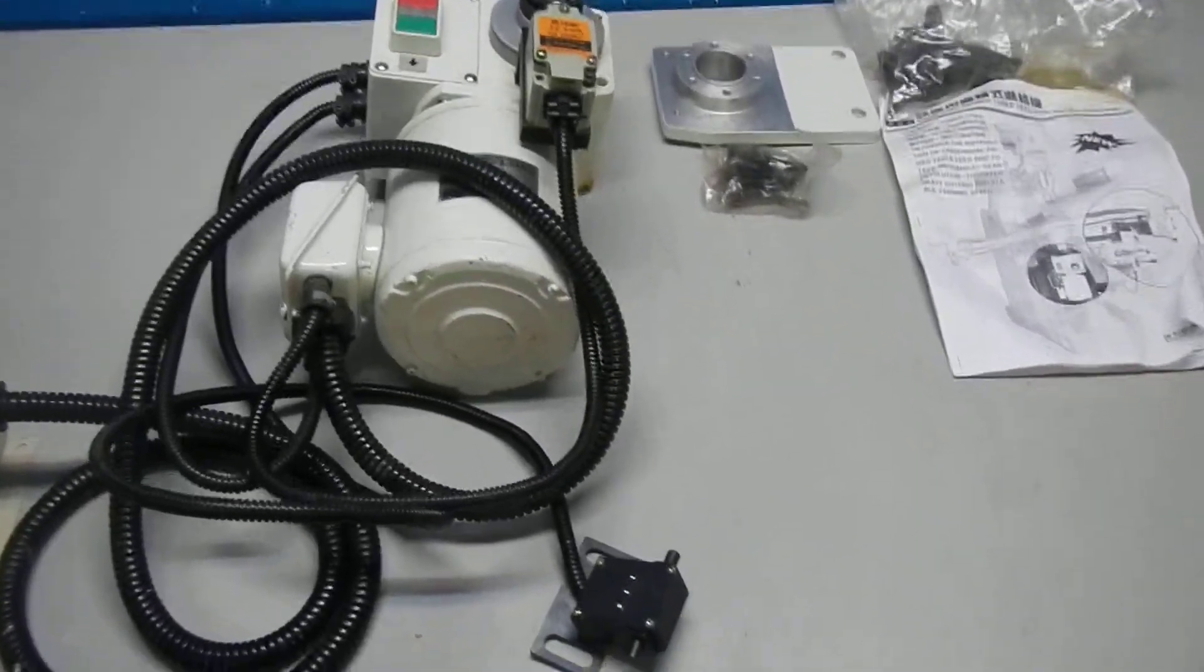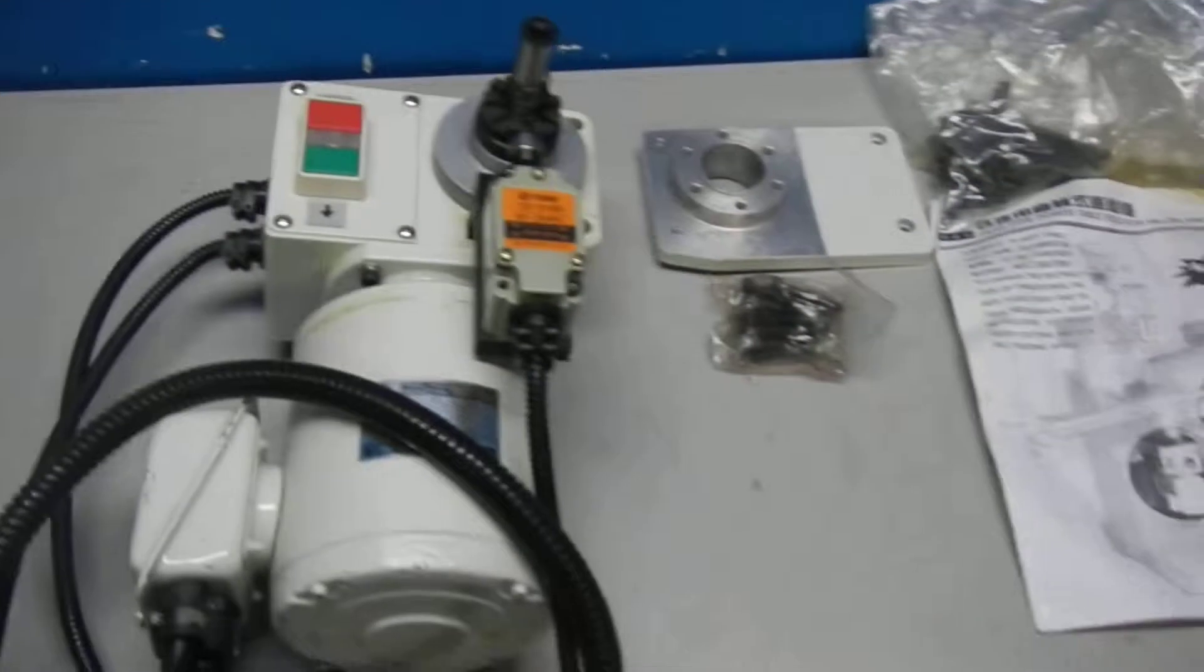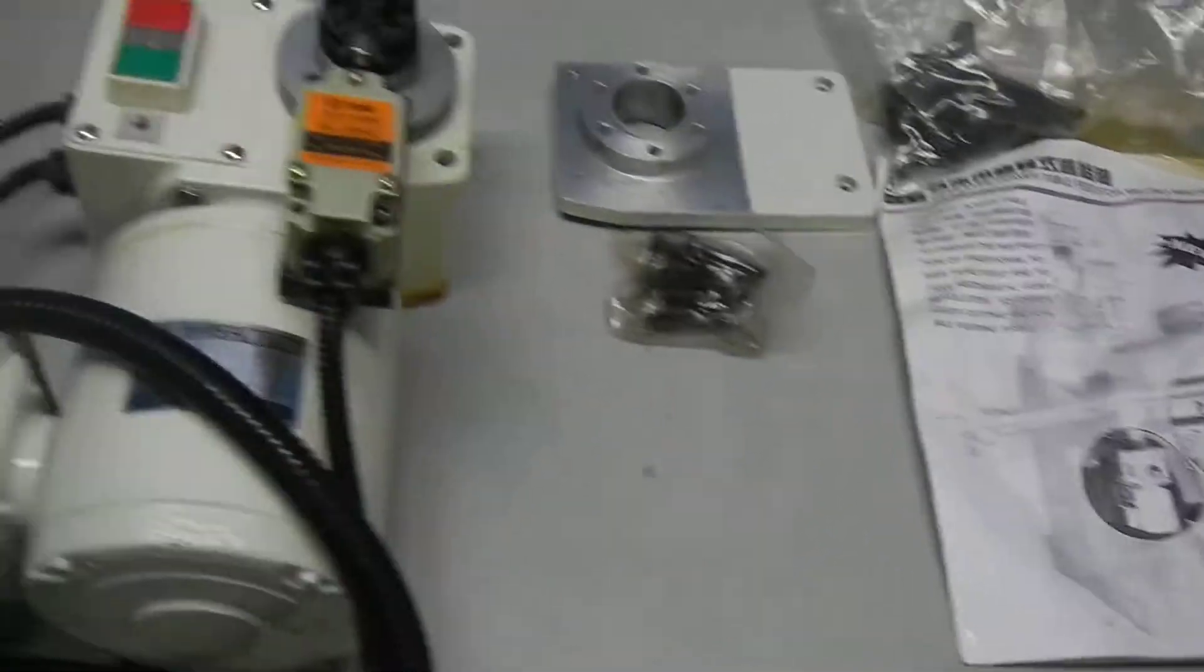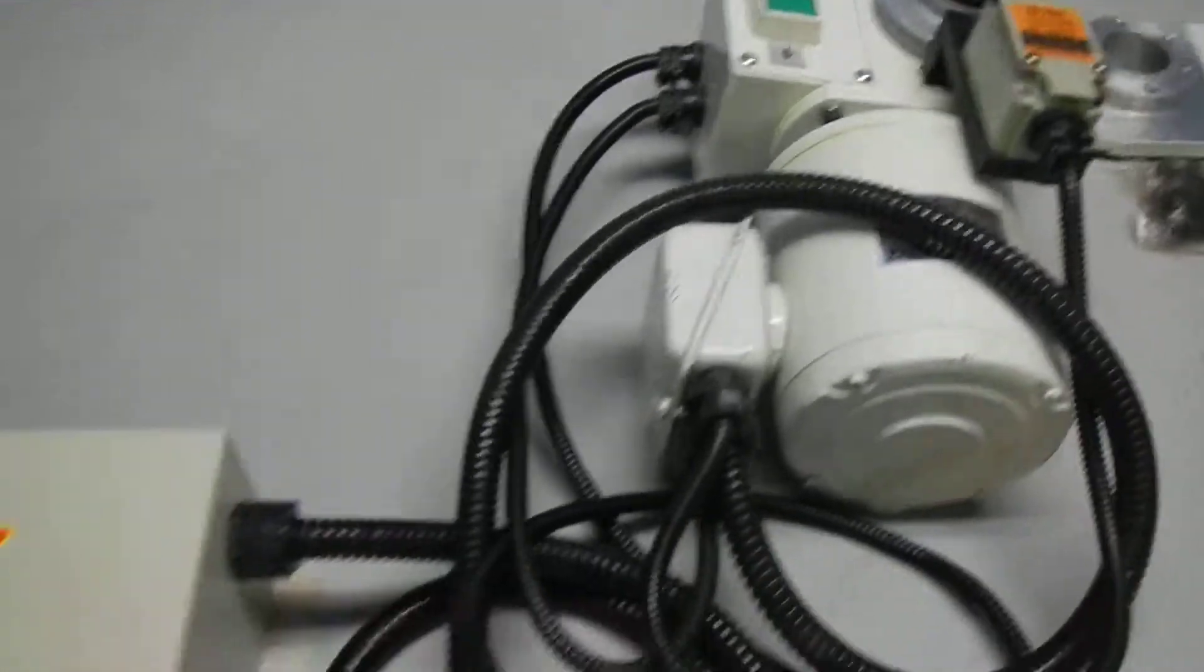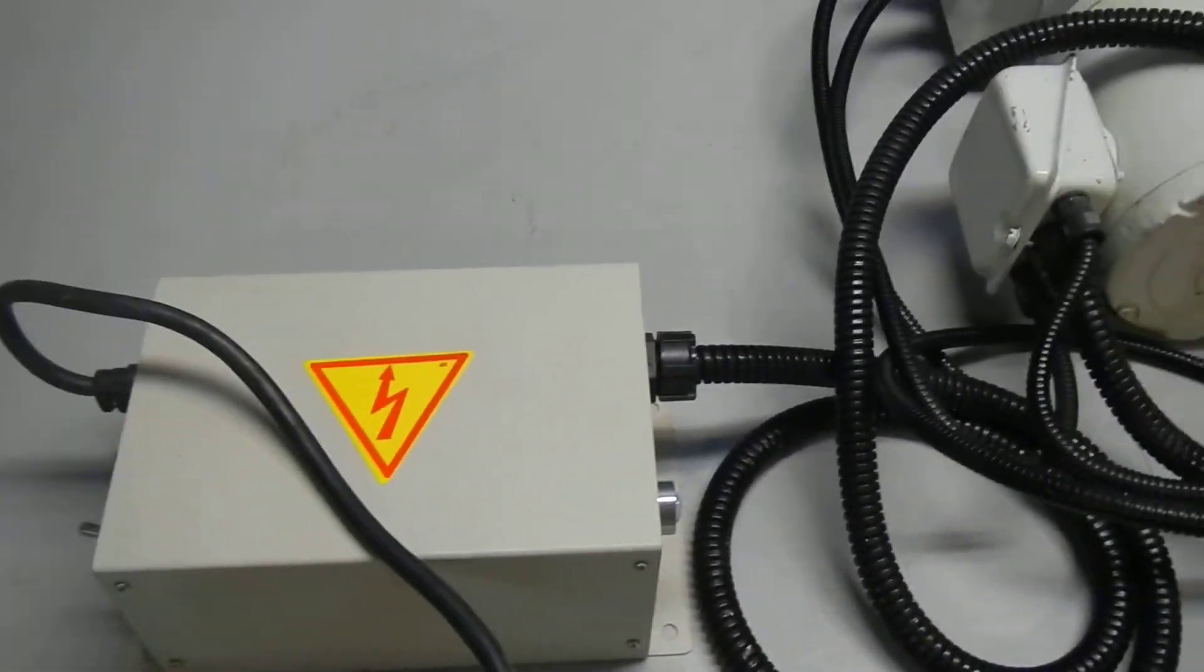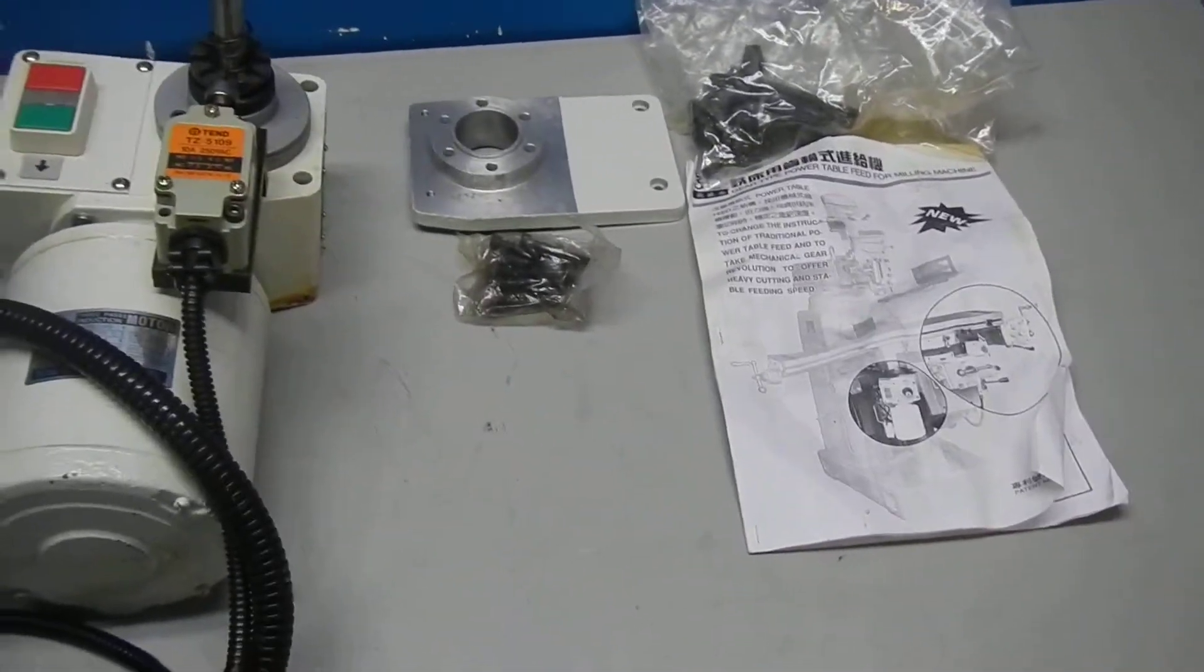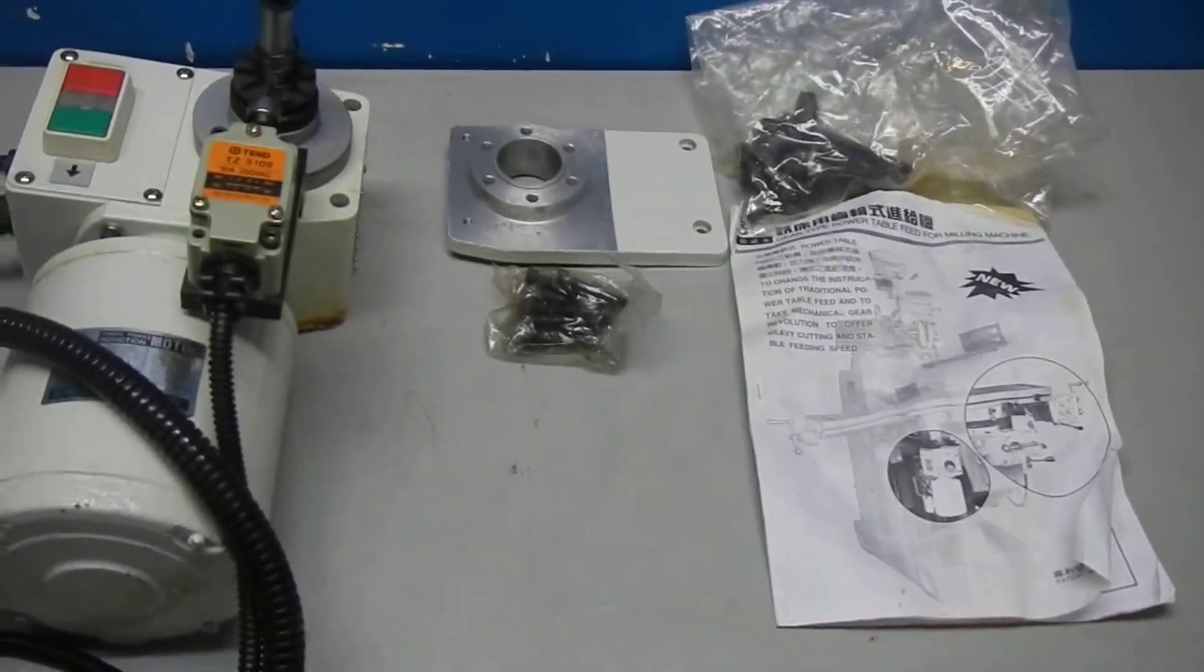Here we have a table feed unit for a milling machine. We're not quite sure what milling machine it exactly fits, but from the label on the box, it's an RF31, which would be a Rong Fu. It could fit other machines.